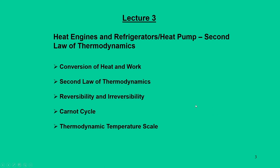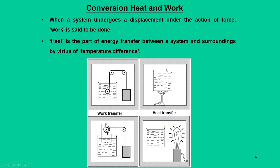In this particular lecture we are concentrating on the following topics: conversion of heat and work, the second law of thermodynamics, the concept of reversibility and irreversibility, the ideal cycle for conversion of heat to work which is the Carnot cycle, and finally the interpretation of absolute temperatures through analysis of the thermodynamic temperature scale. Let us start the first segment: the conversion of heat and work.